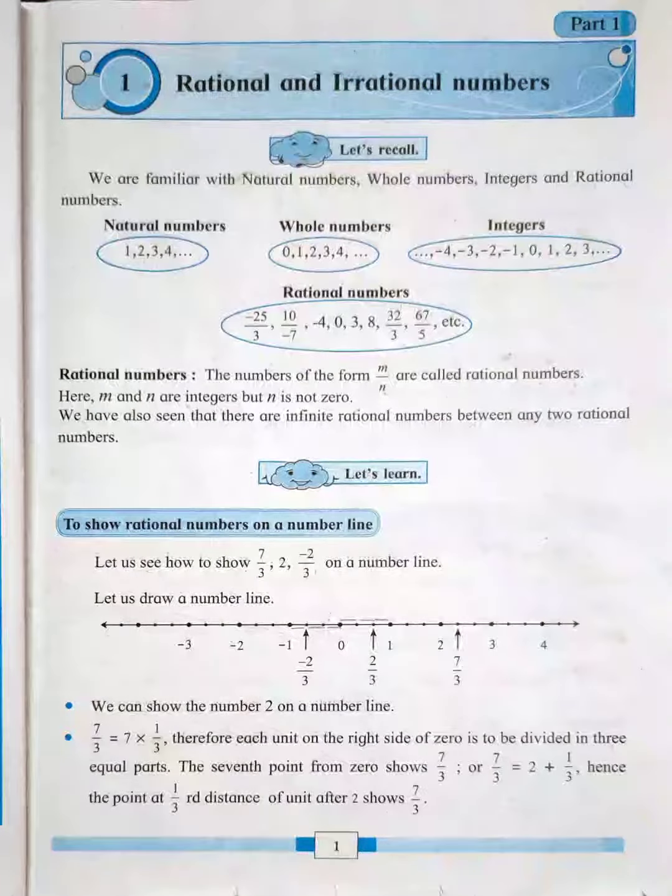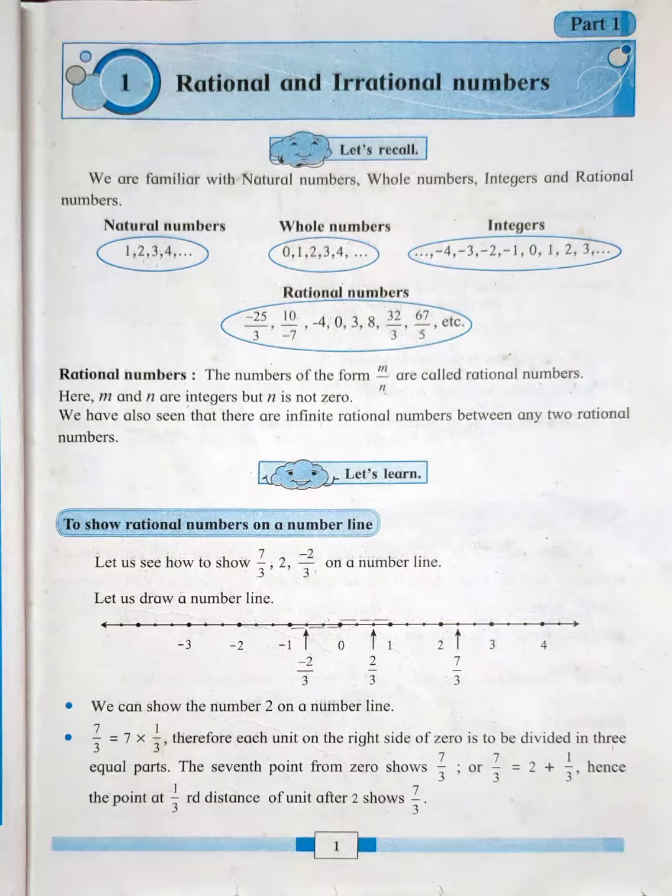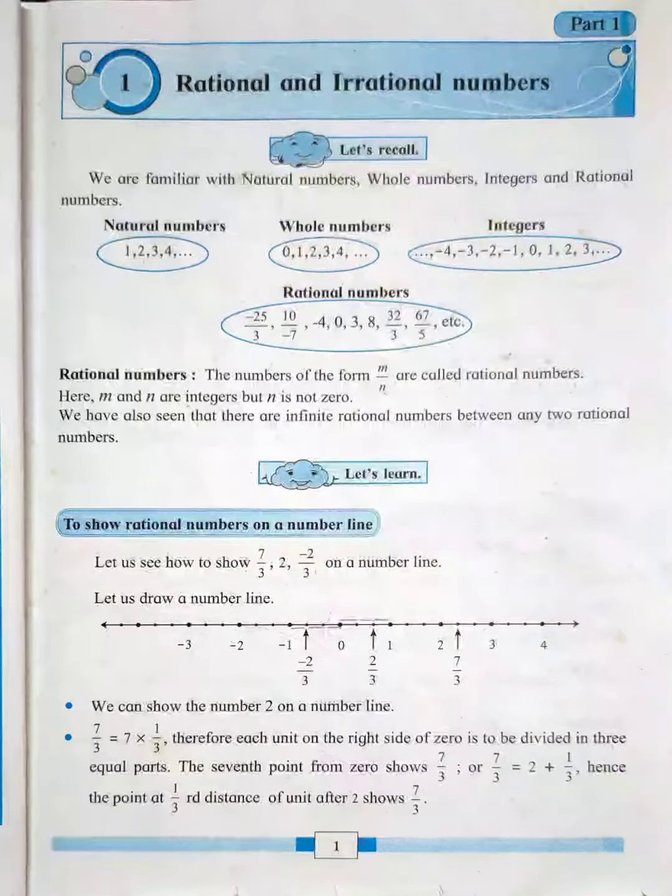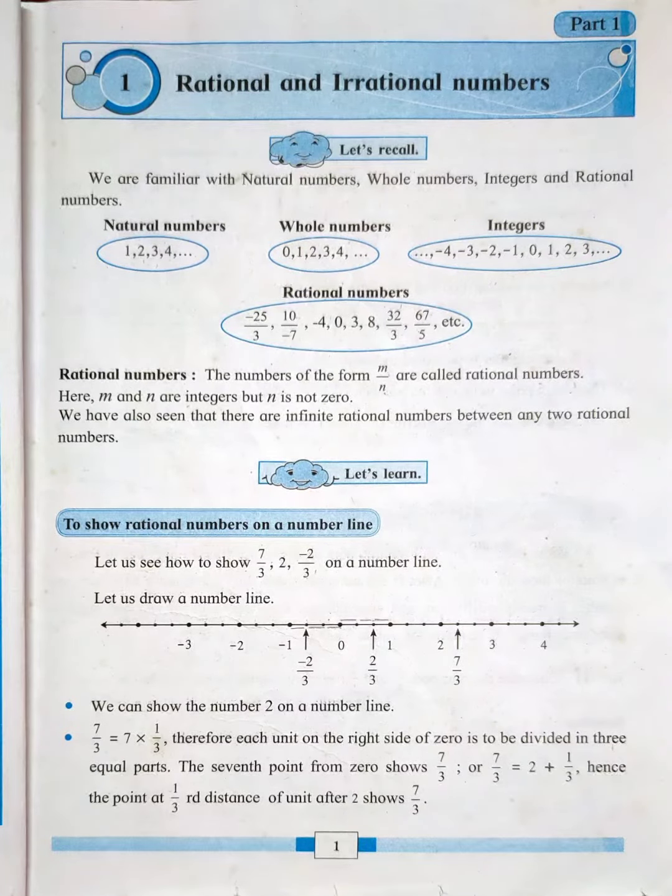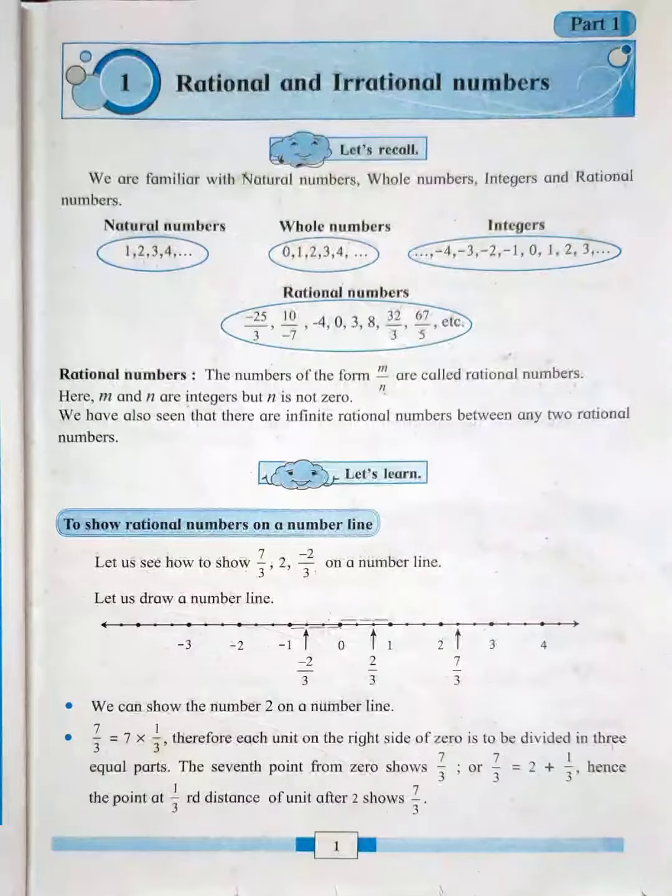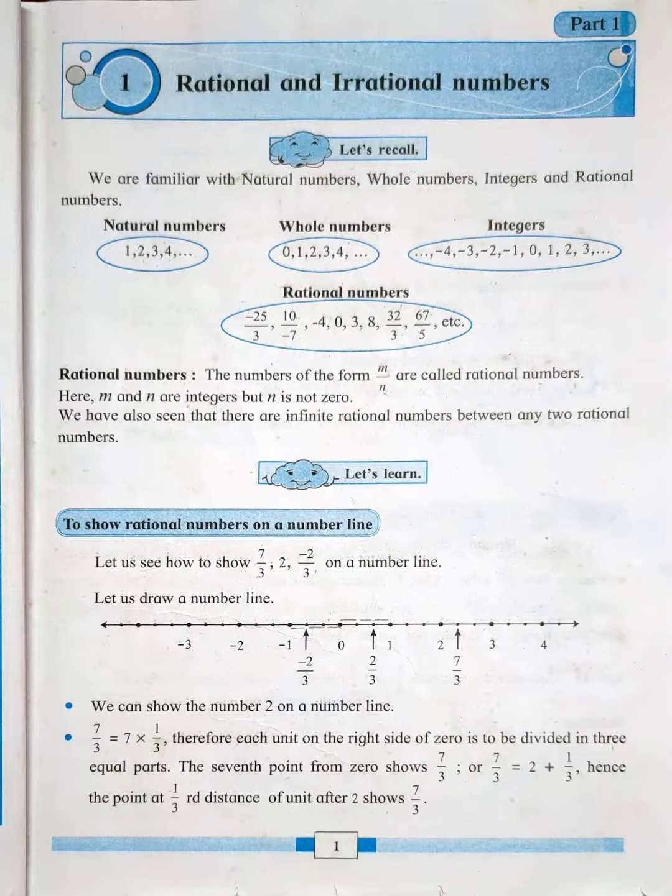Today we will continue the next point, decimal representation of rational numbers. In this point we are going to study how a number which is present in the form of numerator and denominator can be written in the form of decimal numbers.